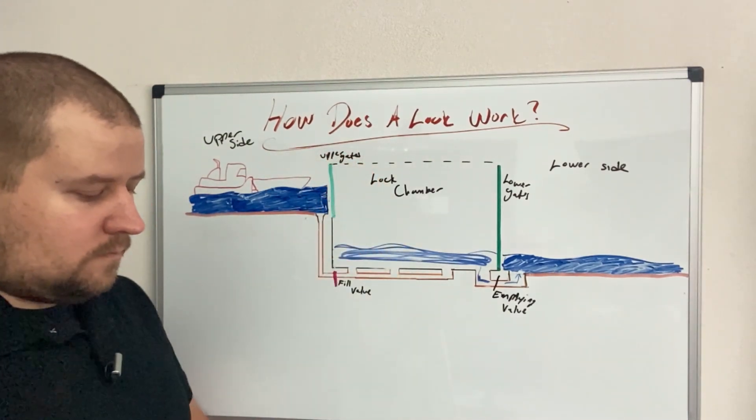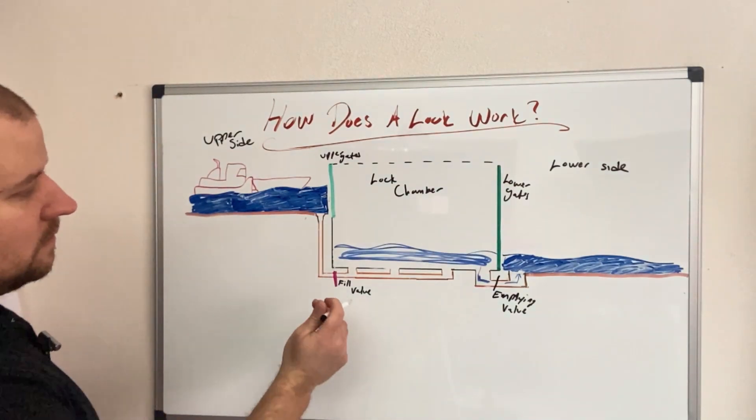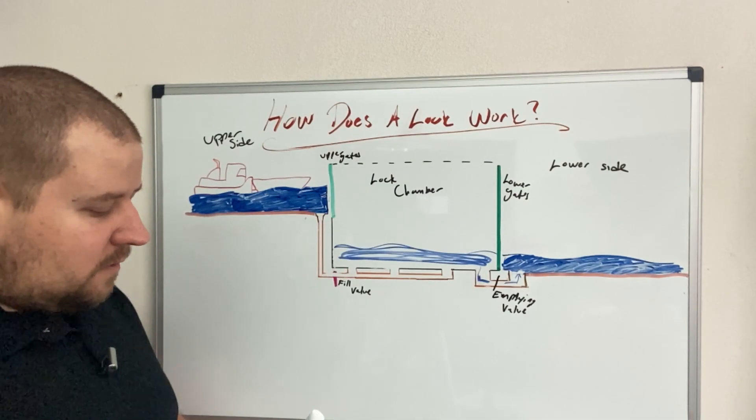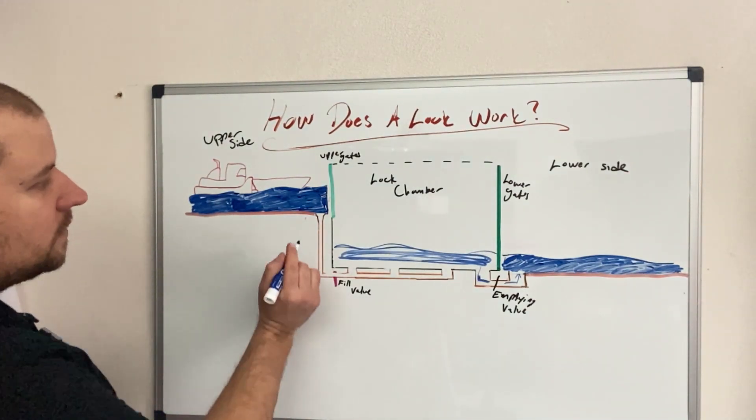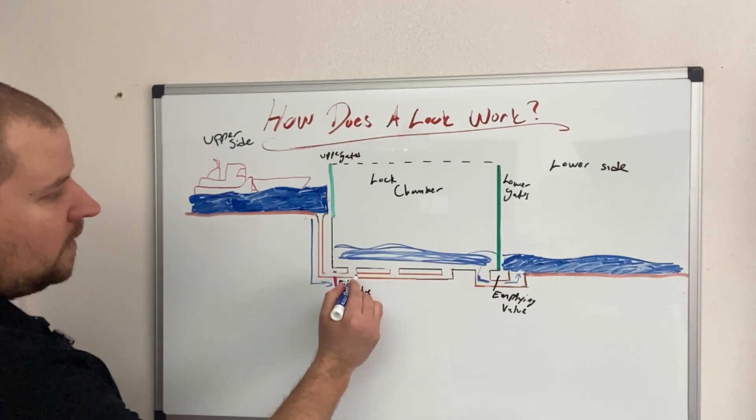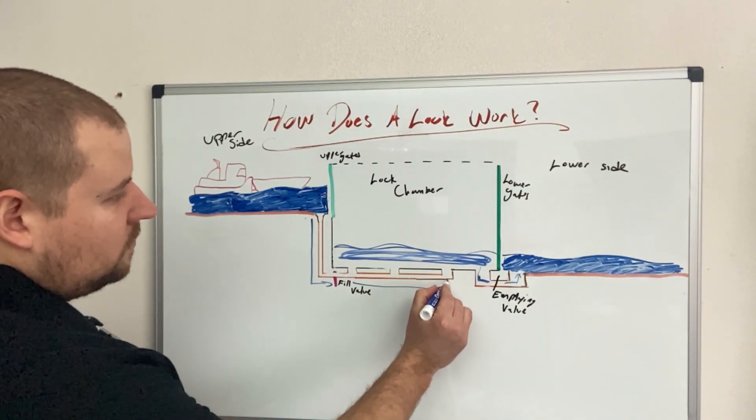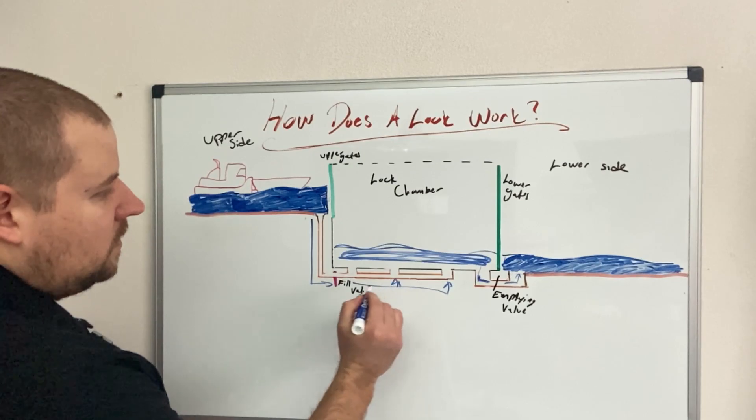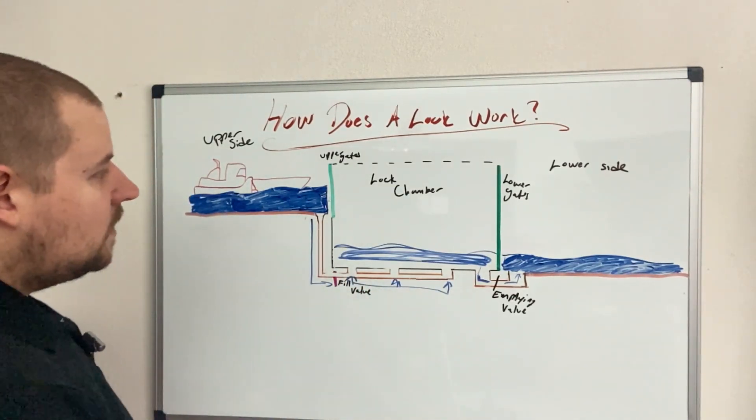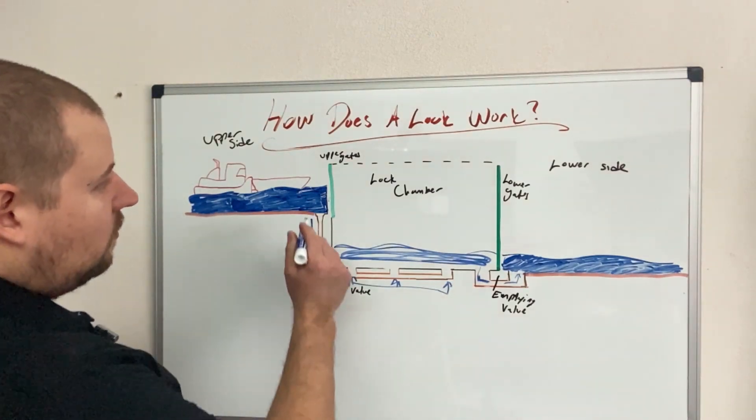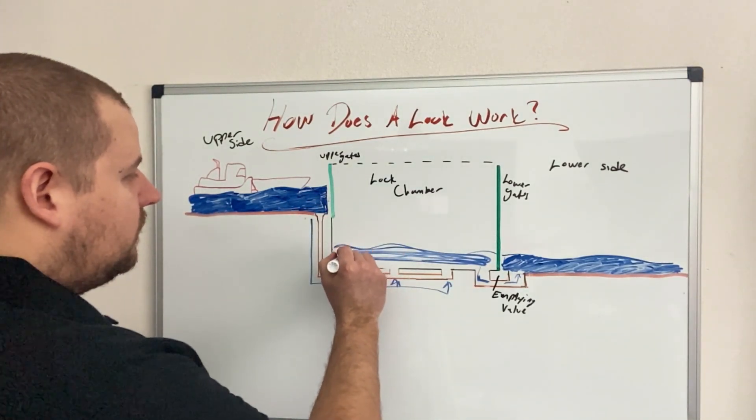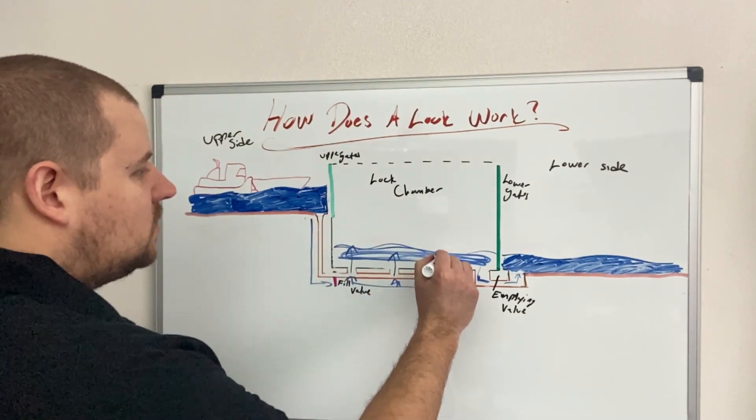Once they open the fill valve, gravity then takes over. The water will flow down the piping and then all the way through and up each of the inlets in the bottom of the lock chamber. So what this will now do is the water up on top, working on the principle of gravity, will then start to flow into the lock chamber.